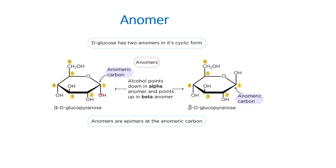By means of stereochemistry, a newly formed chiral carbon results in another stereoisomer. Alpha D glucose and beta D glucose are called anomers, and the carbon where the new chiral center is formed is called the anomeric carbon. Because it is a six-membered ring, we use the notation pyranose. These two carbohydrates — alpha and beta D glucopyranose — are called anomers.